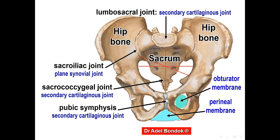The pubic symphysis is between the two hip bones. The sacroiliac joint is between the sacrum and the ilium. The lumbosacral joint is between the sacrum and L5, and the sacrococcygeal joint is between the sacrum and the coccyx. We have two ligaments: sacrotuberous between the sacrum and hip bone, and sacrospinous between the ischial spine and sacrum. We also have the obturator membrane closing the obturator foramen, and the perineal membrane closing the subpubic angle.